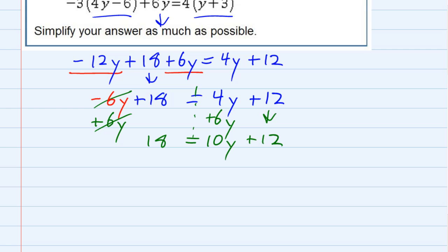This is better because now I only have one y, but I still have to get that y by itself. So, to move the terms that don't have y's to the other side would be my next step. I want to move that plus 12 by subtracting 12, which means I also need to subtract 12 from the other side of the equation.